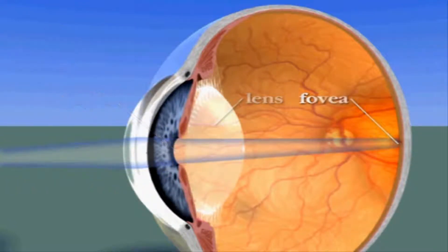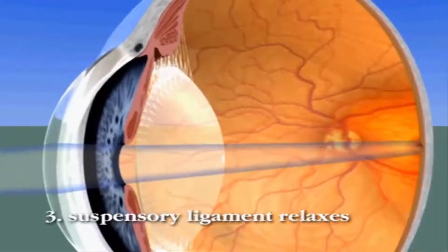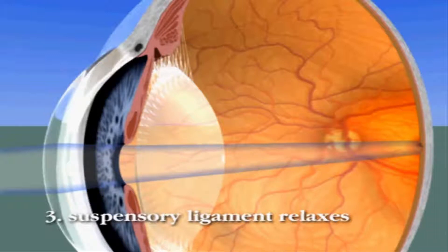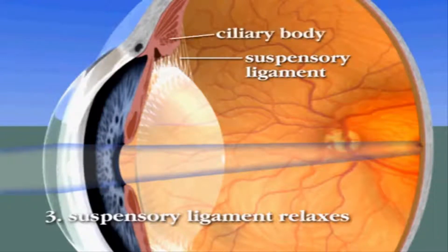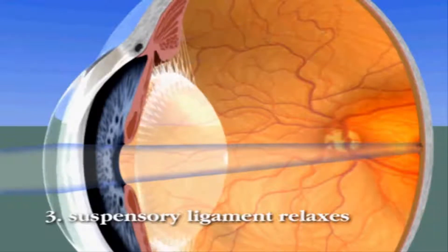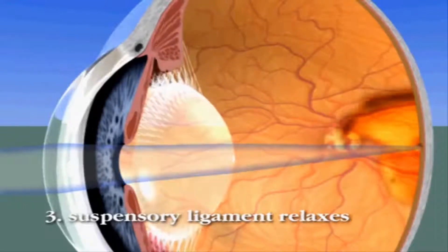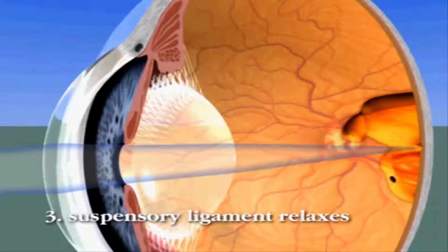Finally, the shape of the lens must change, increasing its refractive index so that the light rays passing through it converge on the fovea. In distance vision, the lens is pulled at its equator by the suspensory ligament, so that it is relatively thin. When the muscles of the ciliary body contract, the tension on the suspensory ligament decreases, and this allows the lens to assume a rounder shape, increasing its power to bend light.